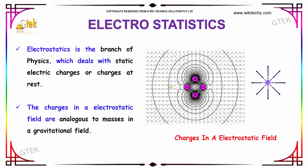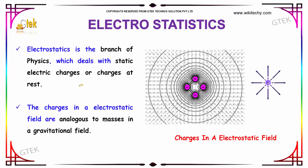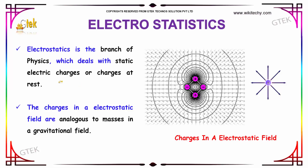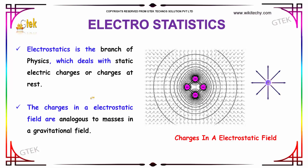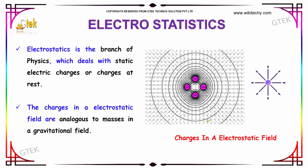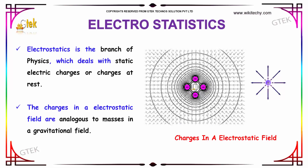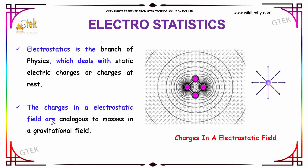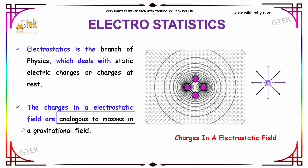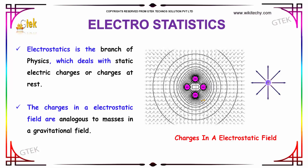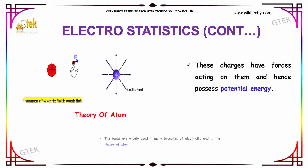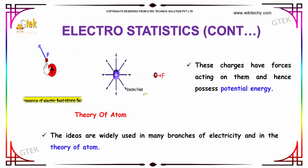Electrostatics is the branch of physics which deals with static electric charges — or we can say, charges at rest. The charges in an electrostatic field are analogous to the masses in a gravitational field. You can see here how the gravitational field is depicted.